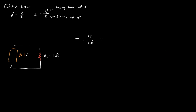Now how do we convert that? A volt is a joule per coulomb, so we have one joule per coulomb divided by one ohm. An ohm is a joule per second per coulomb squared. The joules cancel, and one of the coulombs cancels, leaving us with coulombs per second — one coulomb per one second — which equals one amp. So our system has a current of one amp.